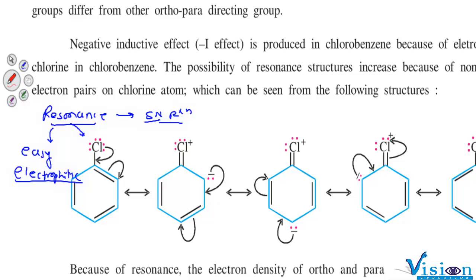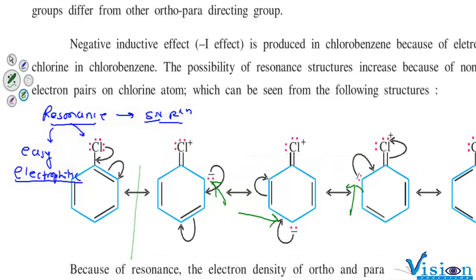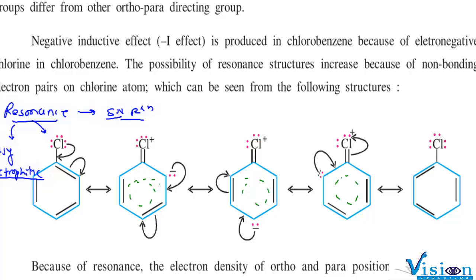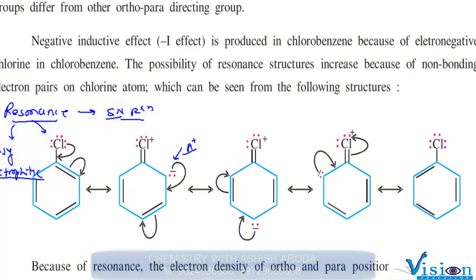Resonance is happening here. Chlorine is donating electrons to the benzene ring, increasing the electron density. Chlorine has non-bonding pairs of electrons which it donates. So the ring has got more electrons. Because of this increased electron density, we have an Electrophilic Substitution Reaction.